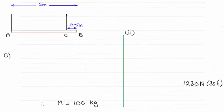Hi there. Now for this question we were asked to find the maximum mass M that you could attach at B in order to keep the beam AB in equilibrium and horizontal.